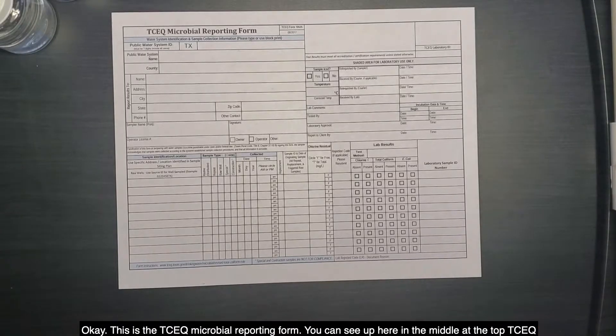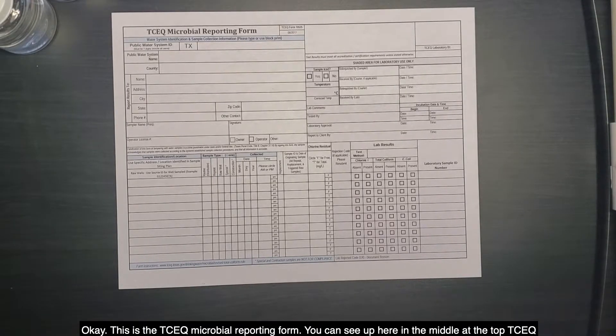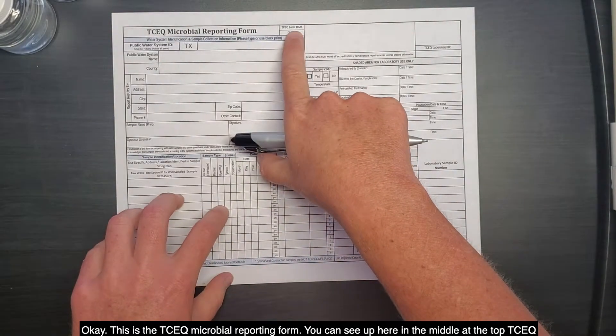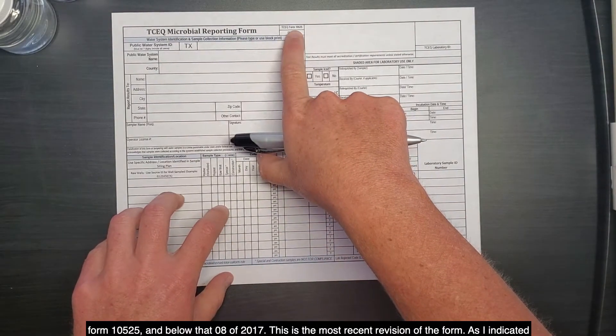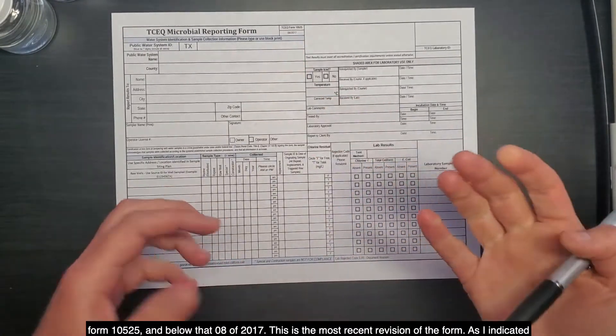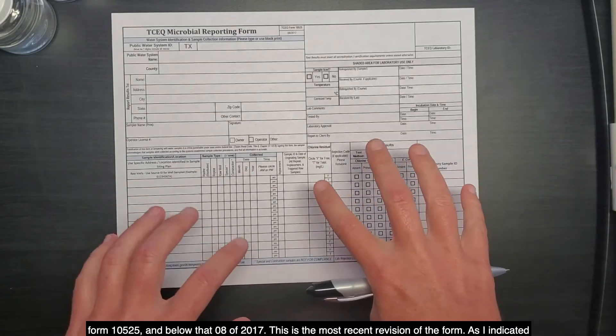Okay, this is the TCEQ microbial reporting form. You can see up here in the middle at the top, TCEQ Form 10525, and below that, 08 of 2017. This is the most recent revision of the form.